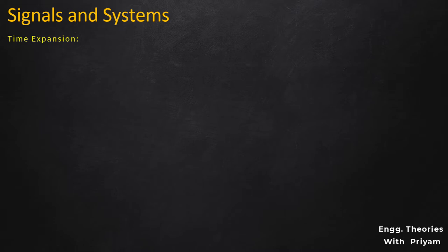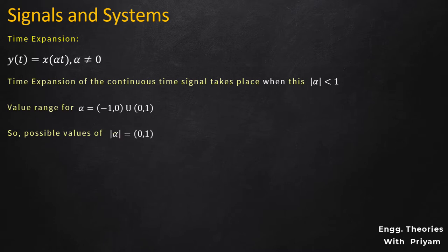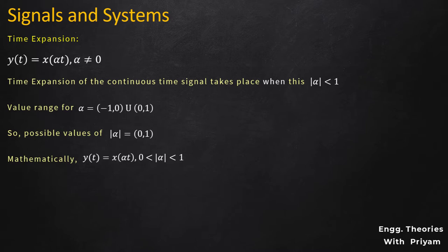Time expansion of the continuous time signal takes place when the modulus of alpha is less than one. If this condition is true, alpha will have the value range from minus one to zero, or from zero to one, and the modulus of alpha will always be positive and less than one. Mathematically, time expansion is given by Y(T) = X(alpha*T) where alpha lies between zero and one. When alpha is equal to one, no change in the signal takes place.